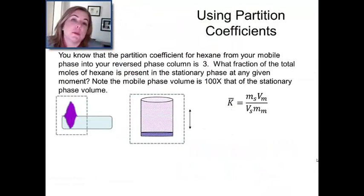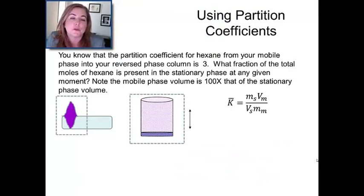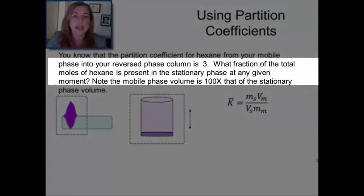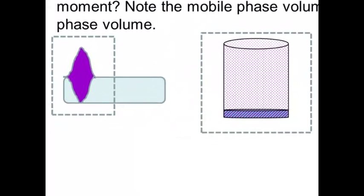So, let's try to use those partition coefficients, because it does have a definition associated with it. Let's say I want to know, going back to our chromatography column, how much of the material is in the stationary phase at any given time? So, we need to abstract that sort of picture I gave you of the Gaussian distribution of concentration of the analyte, and then a little bit of it leaking into the column, into sort of volume A, volume B.